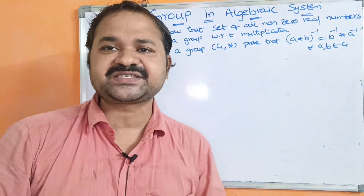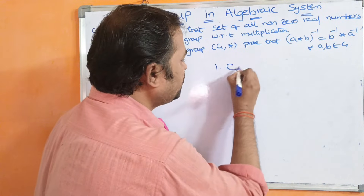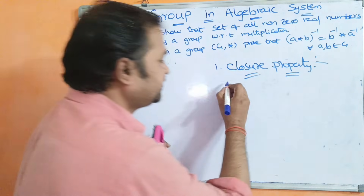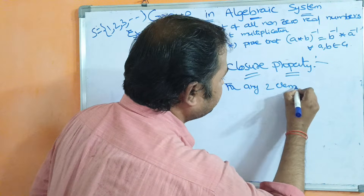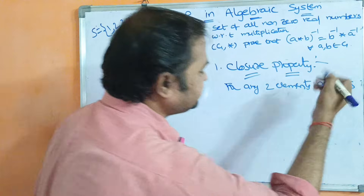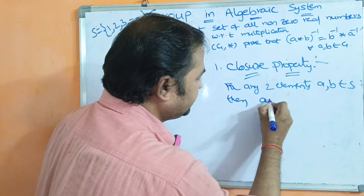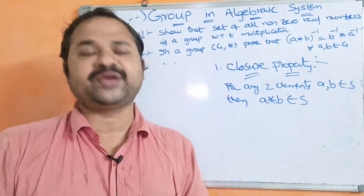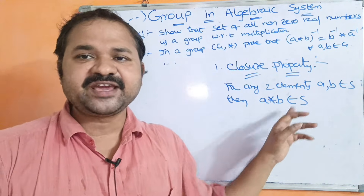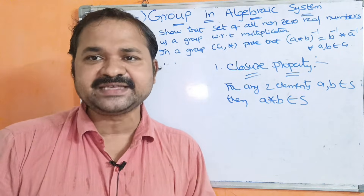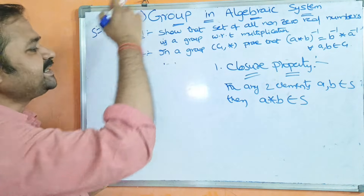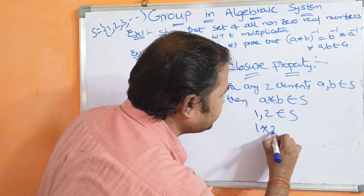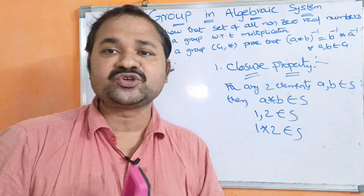A group must satisfy four properties. The first property is closure property. Closure property means we take two elements a and b from the set and perform the star operation. If a star b is also present in the set, then closure property is satisfied. Here we perform multiplication. Let us take 1 and 2 from the set: 1 star 2 equals 2, and 2 is also present in the set. So closure property is satisfied.